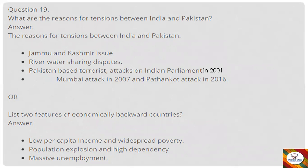Question 19 (option B): List two features of economically backward countries. Answer: Low per capita income and widespread poverty, population explosion and high dependency, and massive unemployment. You can write either the India-Pakistan tensions answer or this one.